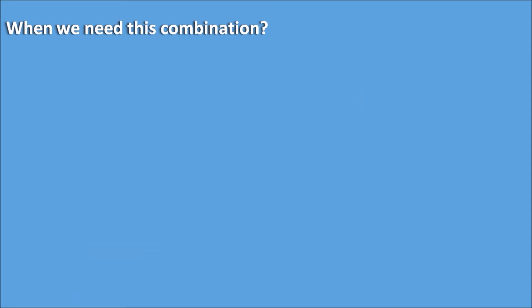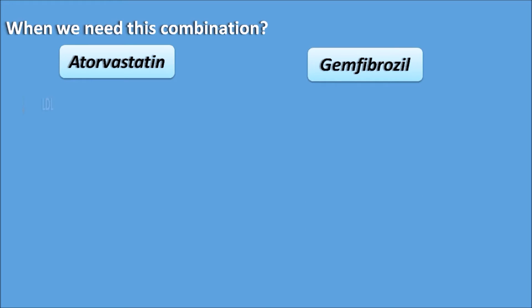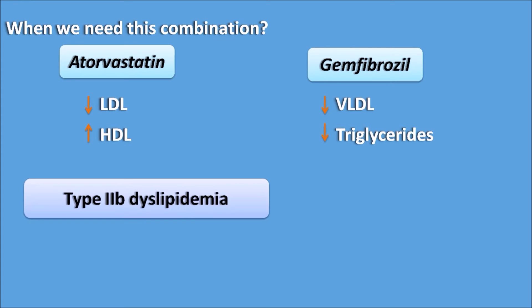So when do we need this combination? Let us see when we require the combination of atorvastatin and gemfibrozil. Atorvastatin decreases LDL and increases HDL, whereas gemfibrozil decreases VLDL and triglycerides. We require this combination when both LDL and VLDL levels are elevated in the body. One such dyslipidemia is type 2b dyslipidemia, in which both LDL and VLDL levels are increased.